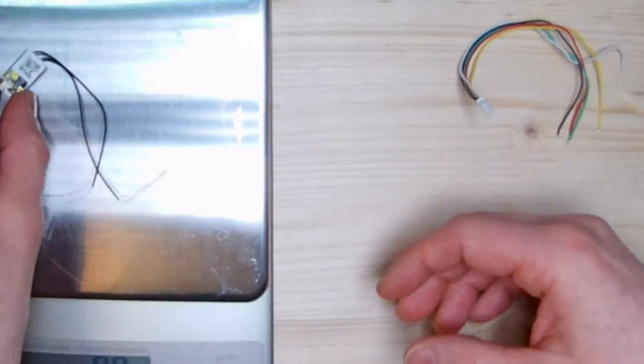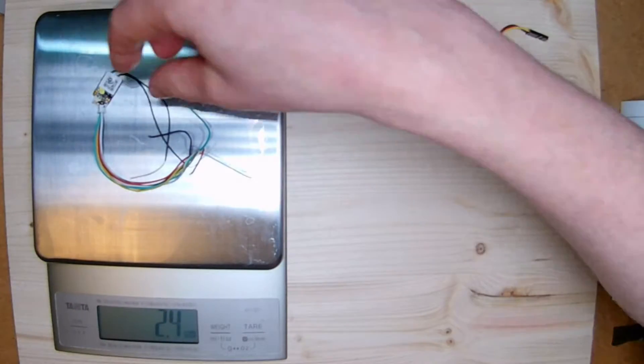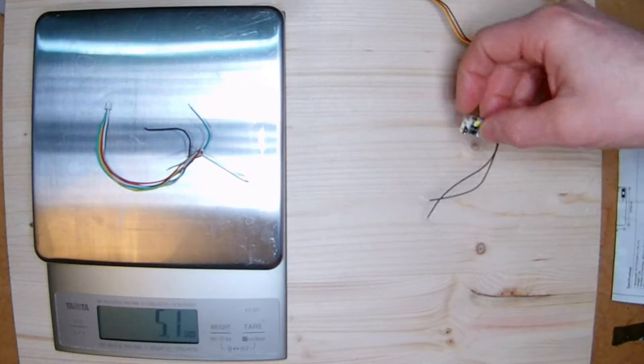The receiver weighs 1.1g without the cables and 2.4g including the cables. Seems the cables with the connector are heavier than the RX itself.